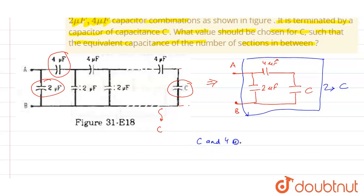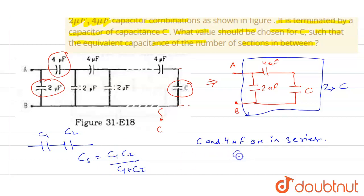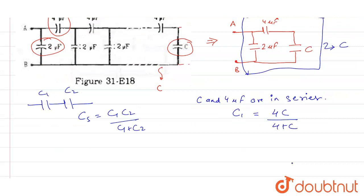As per the figure, we can clearly see that this C capacitance and four microfarad are in series. When two capacitors are connected in series, the net series capacitance is equal to C1·C2 divided by (C1 + C2). In this case, the net series capacitance C1 is equal to 4C upon (4 + C).